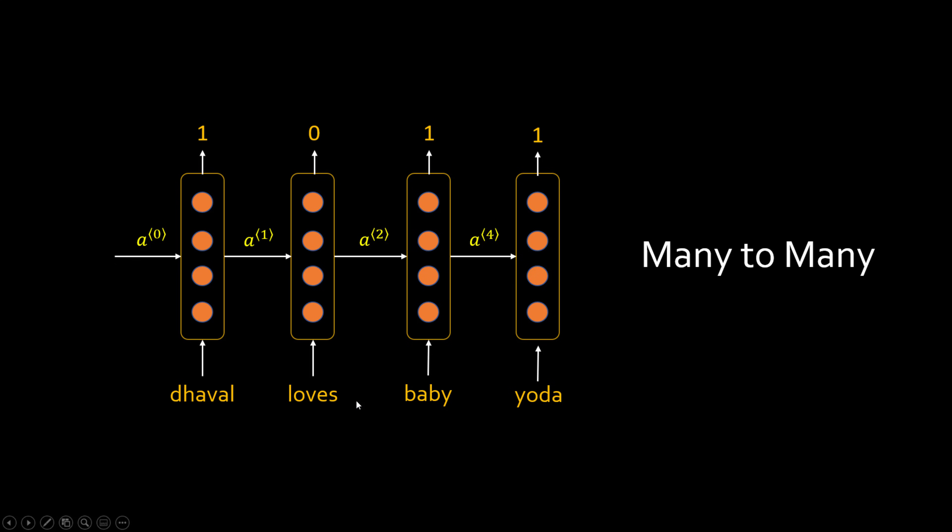This is the case of many-to-many RNN because you have many inputs (X) and you have many outputs (Y). The generic way you can represent this is X1, X2, all the way till XT, and Y1, Y2, all the way till YT. So this is a many-to-many recurrent neural network.